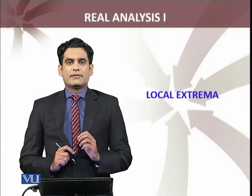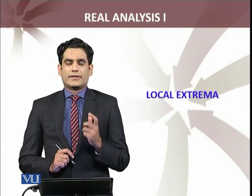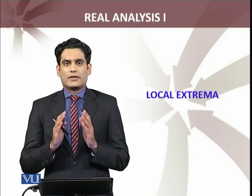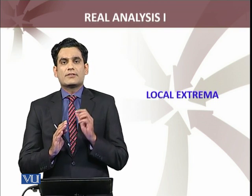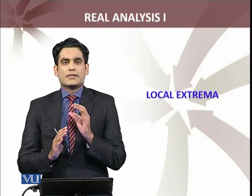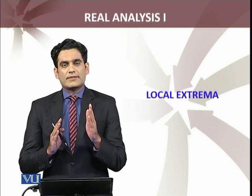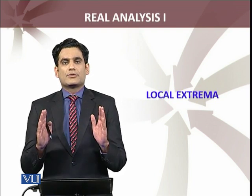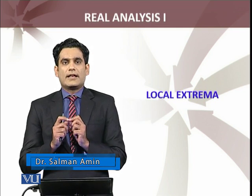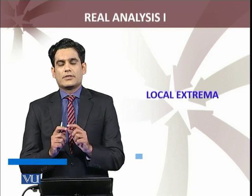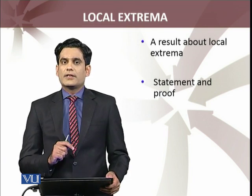We are going to discuss a real valued function — the relationship between the local extrema and nth order derivative of the real valued function. x equals x naught कोई domain का point है, उसके nth order derivative x naught पे non-zero हैं, और यह smallest n है such that nth order derivative at x naught is non-zero. इसका मतलब है बाकी तमाम derivatives at x equals x naught जो n से कम हैं वो सब zeros हैं. So, local extrema और इसके दरमियान relationship जो है यह हम discuss करेंगे — a result about the local extrema उसको state भी करेंगे और proof भी करेंगे.